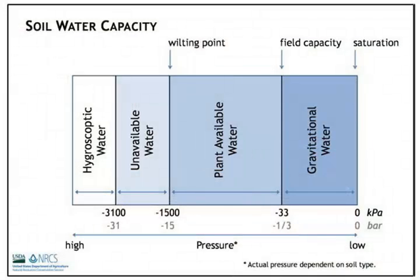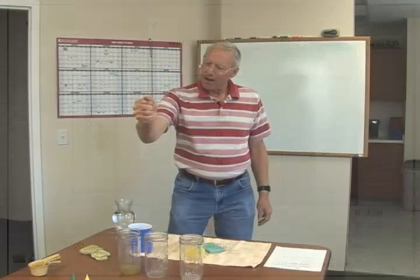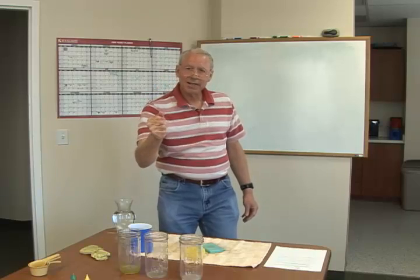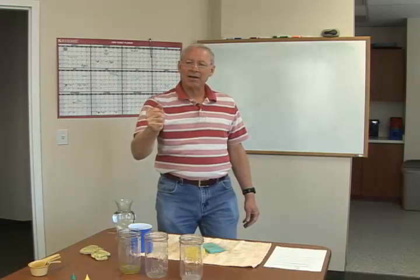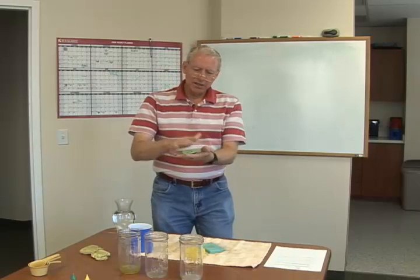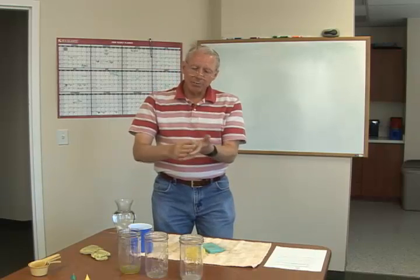At wilting point, there is still moisture in the soil, but the plant cannot get it away from those soil particles — cannot get it inside its root cells and into the plant. No matter how hard it tries, it can't get it in. But the soil is still a little bit damp — that's wilting point.